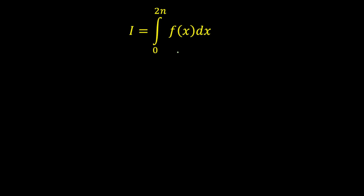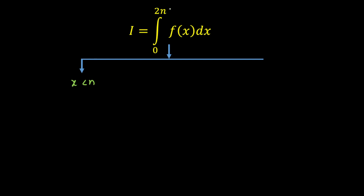Now before integrating, I am going to define the function. The function is defined in two categories: first, when x is less than n — since n is the midpoint when it goes till 2n — the function will be mod of x minus 2n. And when x is greater than or equal to n, the function will be mod of x, as I told you the logic in the previous slide.